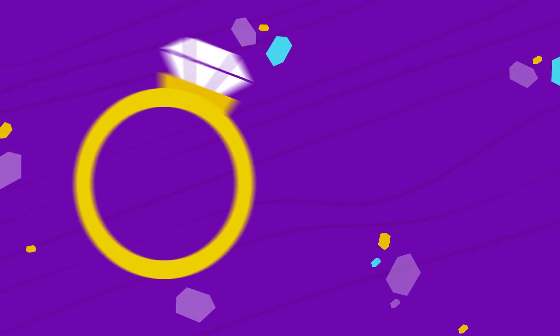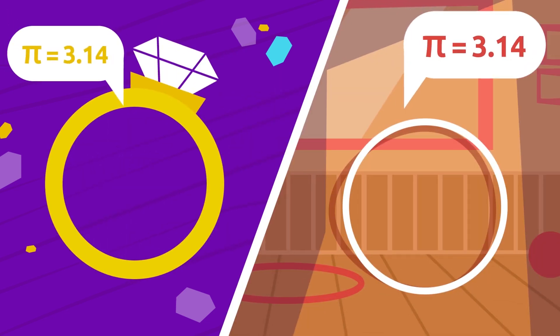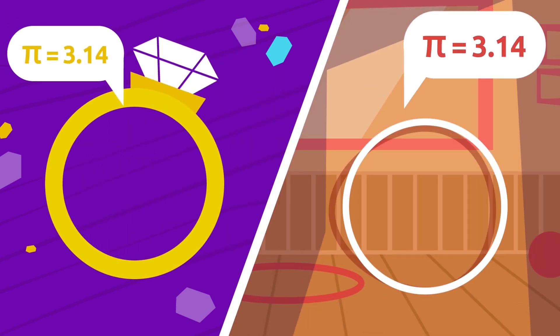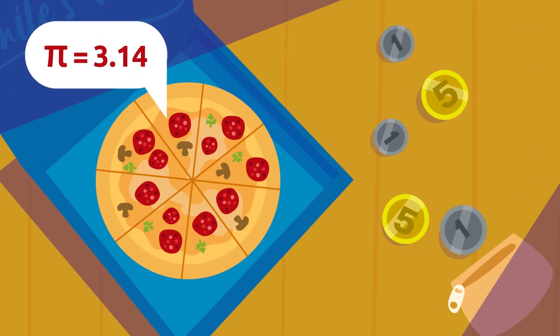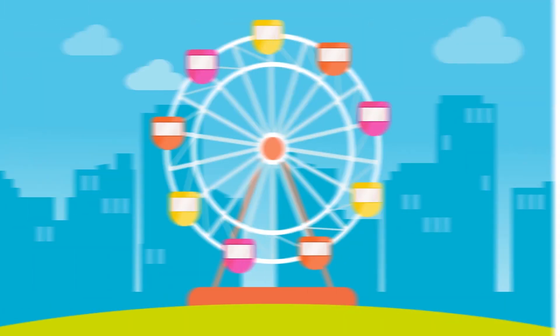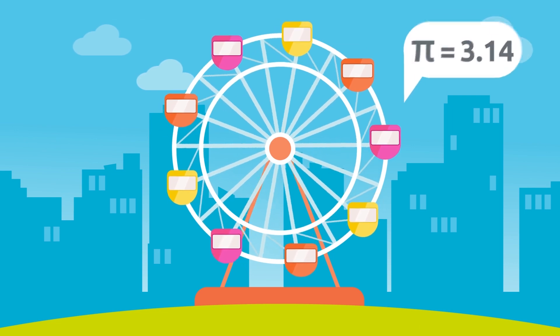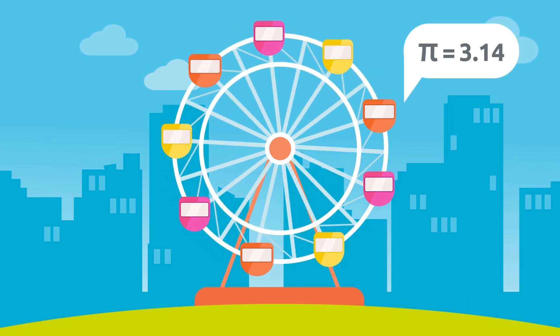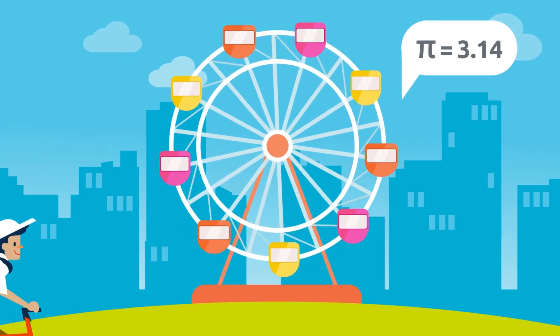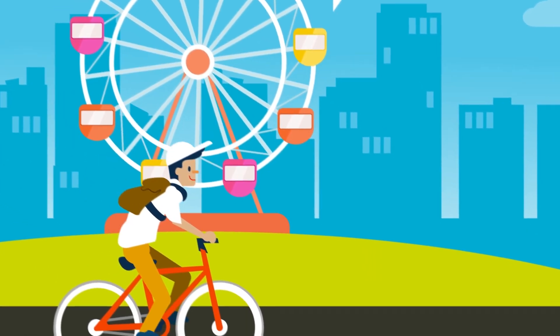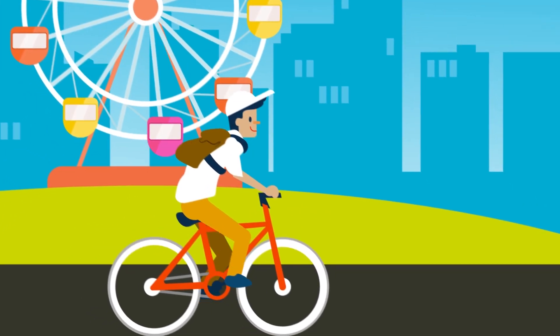We say that it's a constant because number pi is the same for every circumference in the world. In other words, this number is always equal to 3.14. Would you like to check? It's very simple — look for a measuring tape and measure the perimeter of a round object you have at home.